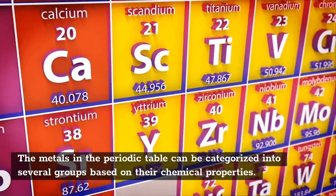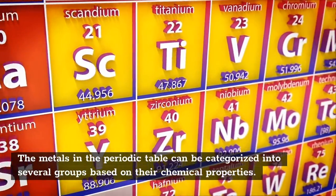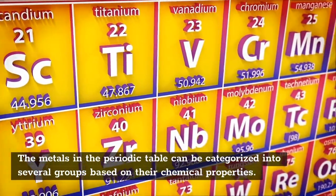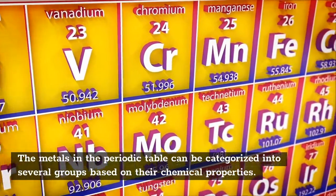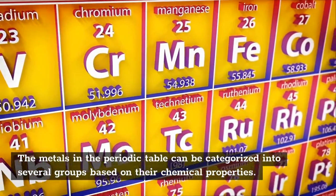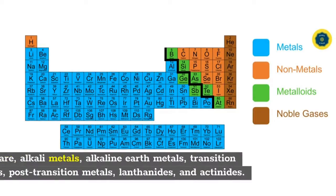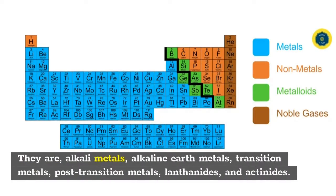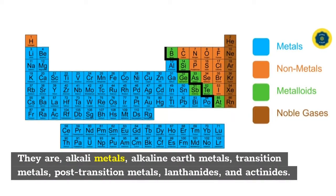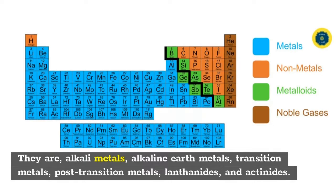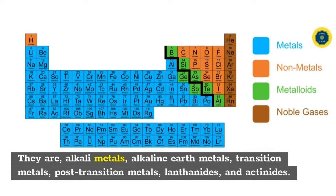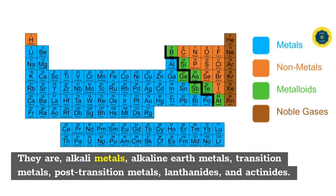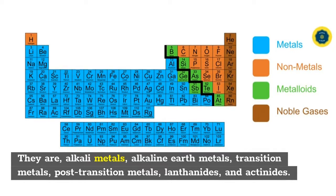The metals in the periodic table can be categorized into several groups based on their chemical properties. They are alkali metals, alkaline earth metals, transition metals, post-transition metals, lanthanides, and actinides.